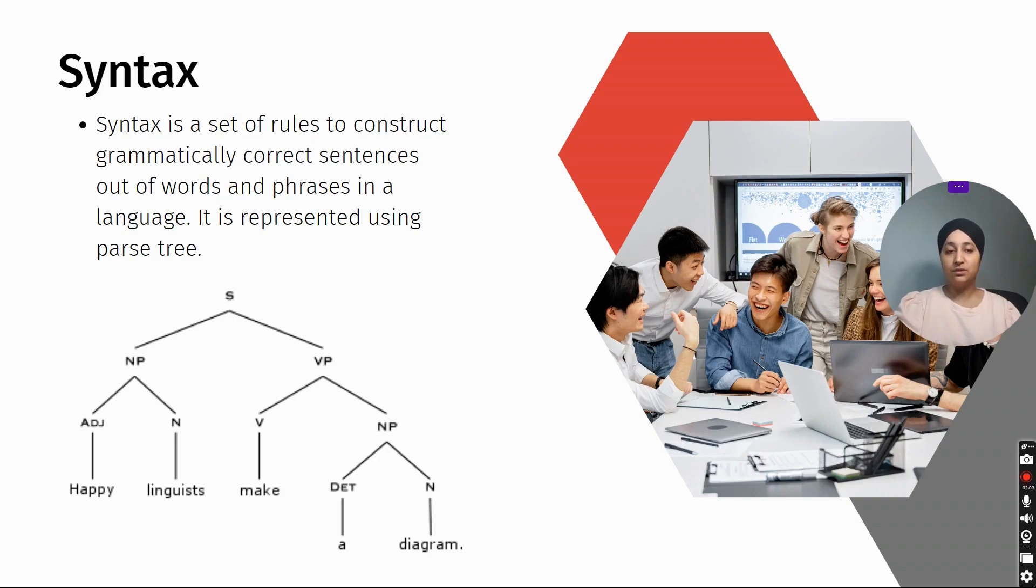A sentence can be divided into noun phrase and verb phrase. Noun phrase is further divided into adjective and simple noun. On the other hand, verb phrase is divided into two parts: verb and noun phrase. Again we can divide it as determinant and noun. Now we can see we have broken the sentence into words.